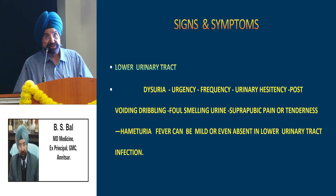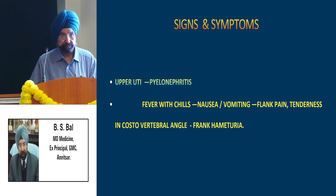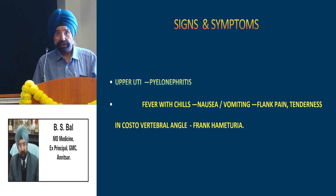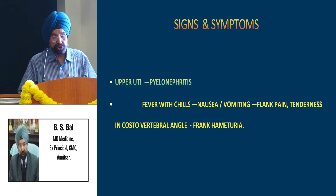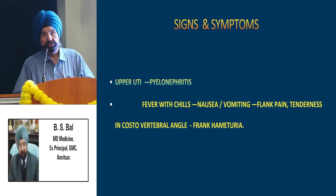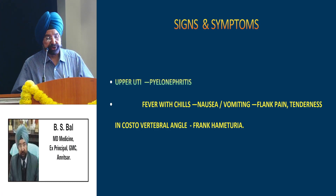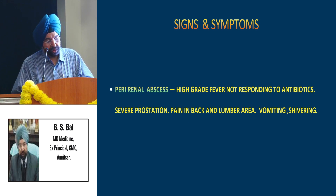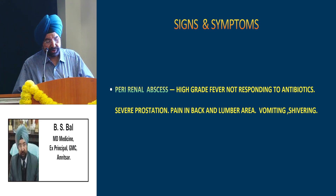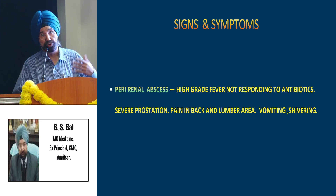Fever is usually less or very mild in lower urinary tract infection. In upper UTI, which we also label as pyelonephritis, all the symptoms of lower UTI can be present but along with that fever is a prominent feature — high grade fever with chills, nausea, vomiting, flank pain, tenderness in the costovertebral angle over the back, and sometimes even frank hematuria. Extending to perinephric abscess, there can be high grade fever not responding to usual antibiotics, severe prostration, pain in the back and lumbar area, severe vomiting and shivering.